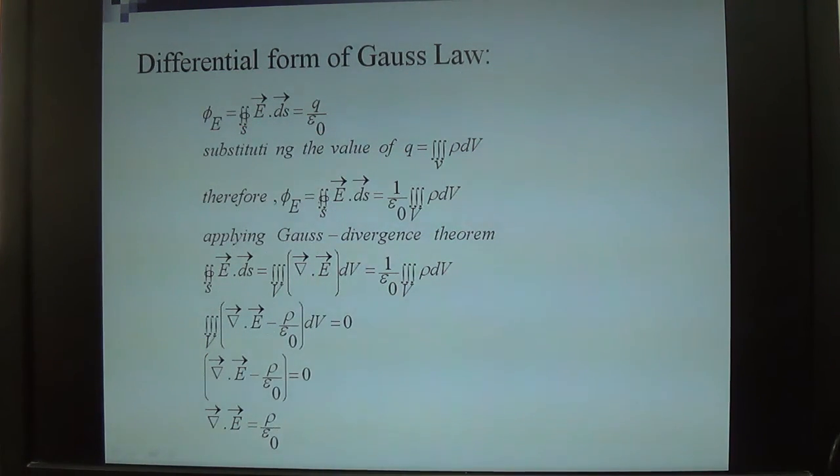Therefore, phi equals closed surface integral E dot dS equals 1 upon epsilon naught. You can put this value here. As a result, you get the right-hand side: 1 upon epsilon naught volume integral rho dV.